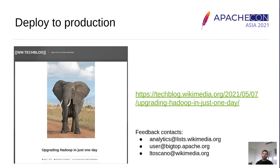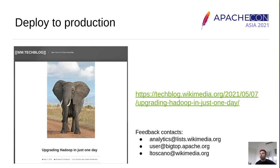For us, it was critical to have a path to Hadoop 3, and Bigtop provided a clear path since we started looking into it. We were able to upgrade from Cloudera to Bigtop, and there is a blog post — I've included the link in the slide — with all the details, gotchas, and lessons learned. I would really love to get your feedback about your own experience and questions, doubts, or suggestions. If you went through a similar path, please reach out. Contact options include the Wikimedia Analytics public list, the Bigtop user mailing list, and my personal email address.